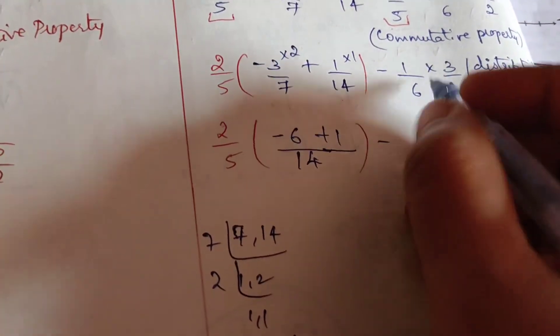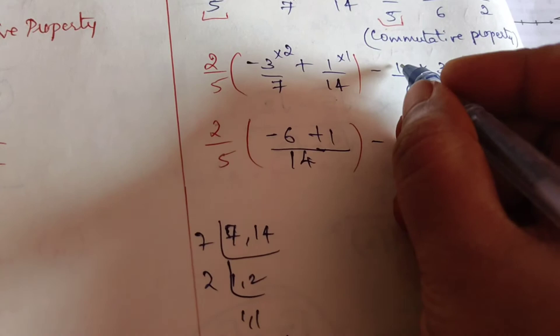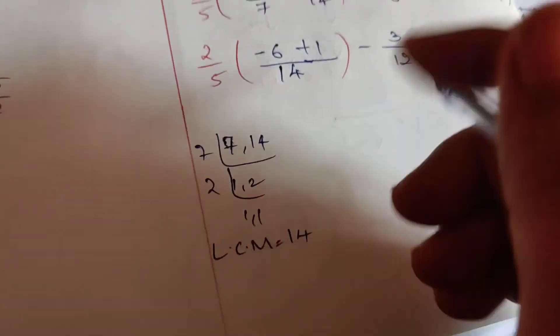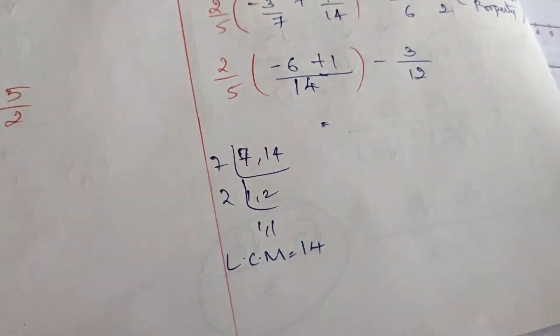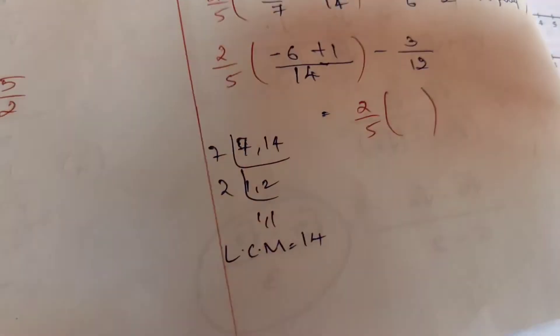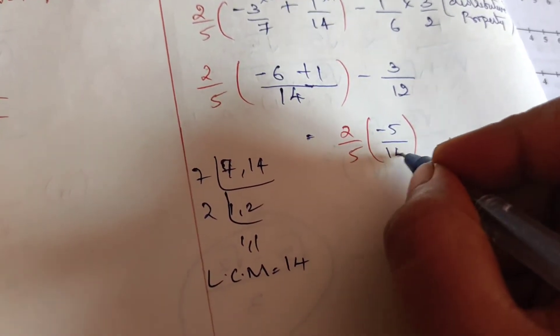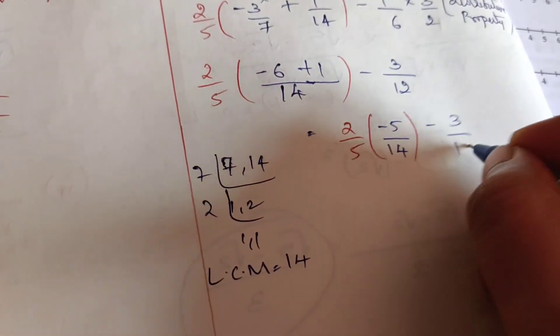Minus here we are going to multiply: 1 × 3 = 3, 6 × 2 = 12. Well now what is the next step? As we know 2/5 is common.